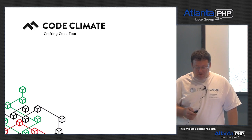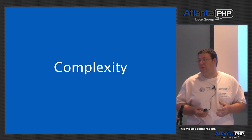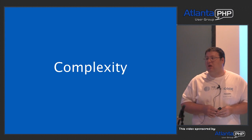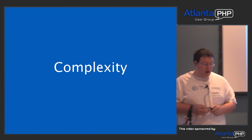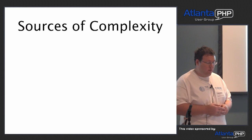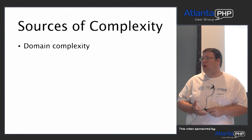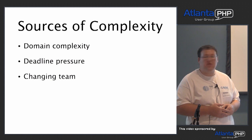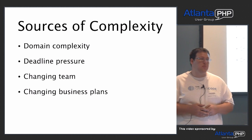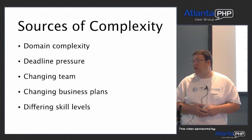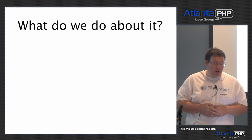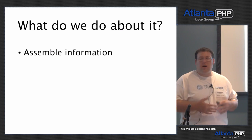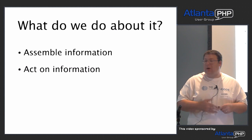All of us in our applications have complexity. Complexity is just part of software. We develop our applications and trade simplicity for features. We have complexity in a number of different ways: domain complexity that comes from the fact that our application is unique, deadline pressure, team changes, people quitting, people coming on board, different coding styles, business plans changing, and different skill levels on our teams. Not everybody codes at the same level.